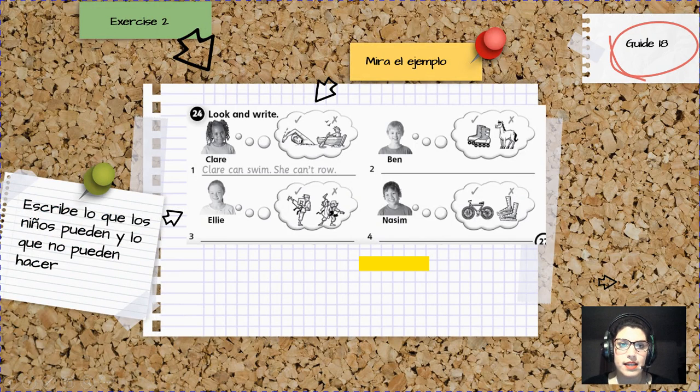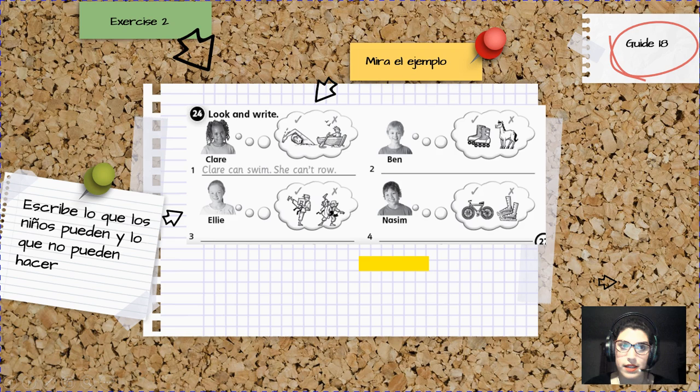The second activity, exercise number two. ¿Qué tenemos que hacer? Escribir otra vez lo que los niños pueden y no pueden hacer. Tenemos en la nube, con un tick lo que sí pueden hacer y con una X lo que no pueden hacer. Mira el ejemplo, ayúdate. Tenemos a Claire. Claire can swing. She can't roll. Okay. Tienes que hacer lo mismo con Ben, con Ellie y con Noelia.